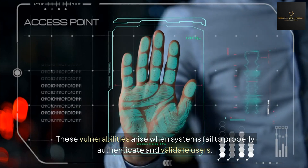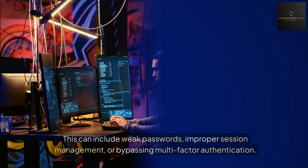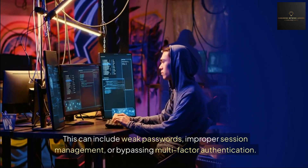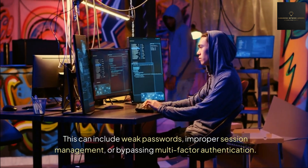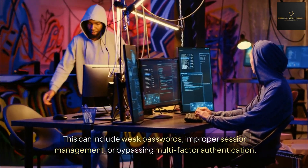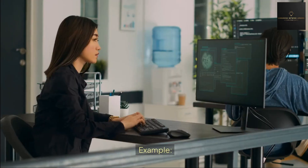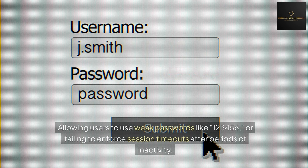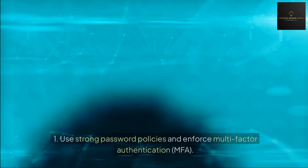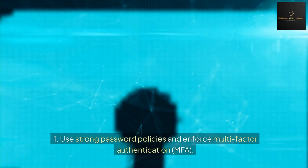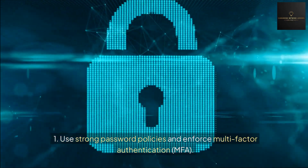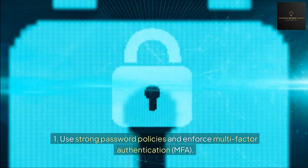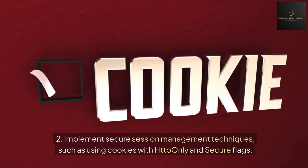Part 8 — A07: Identification and Authentication Failures. What are identification and authentication failures? These vulnerabilities arise when systems fail to properly authenticate and validate users. This can include weak passwords, improper session management, or bypassing multi-factor authentication. For example, allowing users to use weak passwords like '123456' or failing to enforce session timeouts after periods of inactivity.